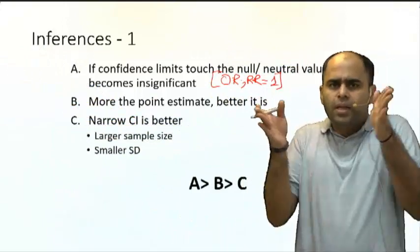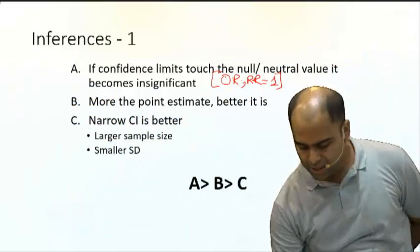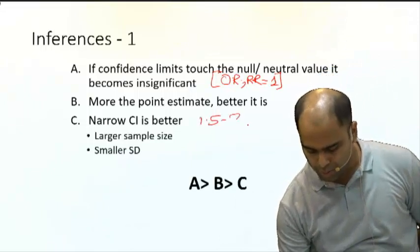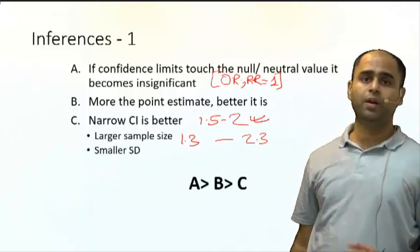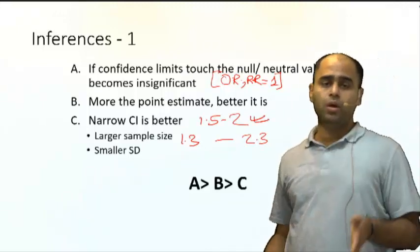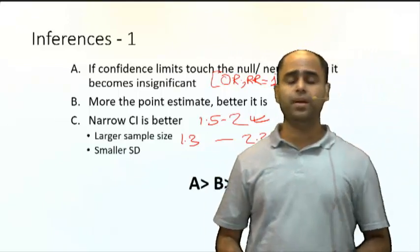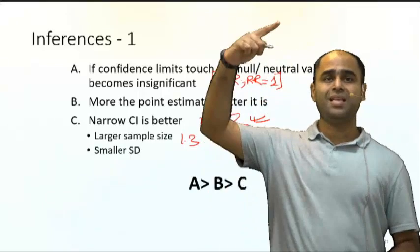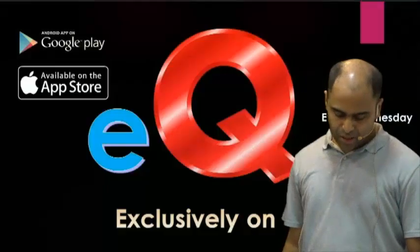Rule C: narrower CI is always better. If I say a CI of 1.2 to 2.2 versus 1.3 to 2.3, which is better? The one from 1.5 to 2 — because a narrower CI means the sample size is larger. So let us now apply this to the question.